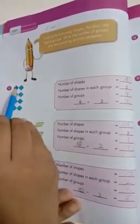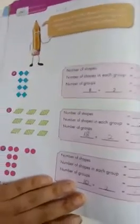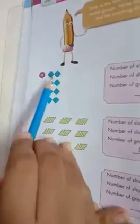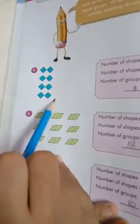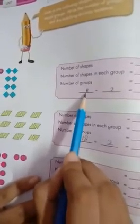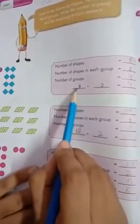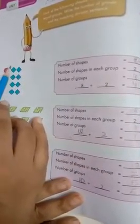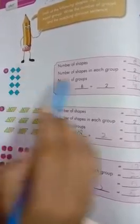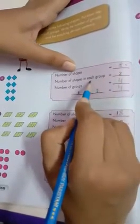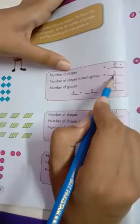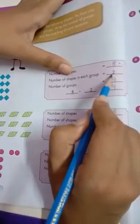First, we will count this. How many blocks are there? Eight. And divided, we mean how many groups are here? One, two. That means there are two groups. So we will divide it from two. So first, we have written number of shapes. Number of shapes is eight.